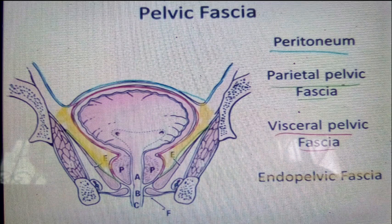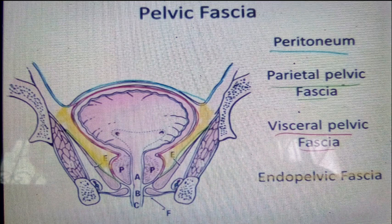You can see the peritoneum there, indicated with a blue line. The peritoneum is colored green. You also have the visceral pelvic fascia colored red, and the endo-pelvic fascia is also shown in this diagram.